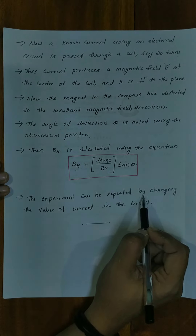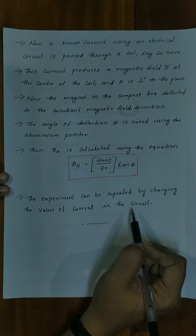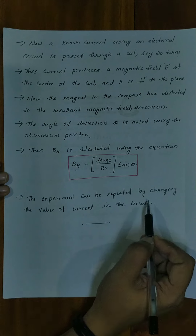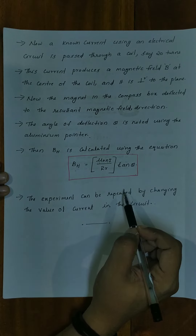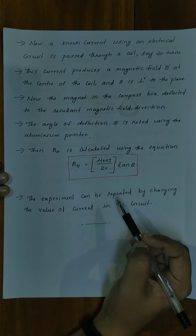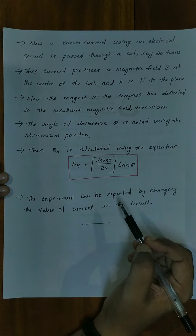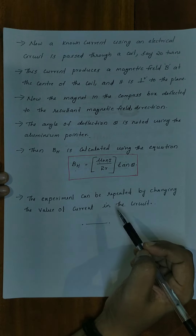The experiment can be repeated by changing the value of current. We record the values of current and the corresponding deflection angles. In 4 to 5 trials, we calculate the mean value of BH.